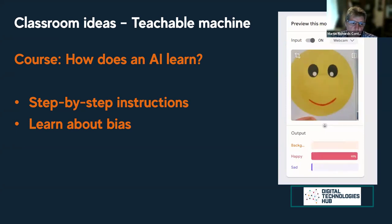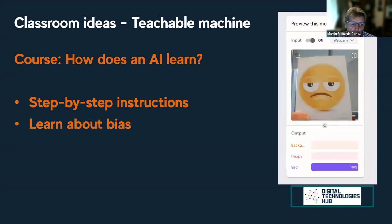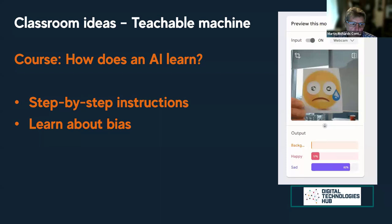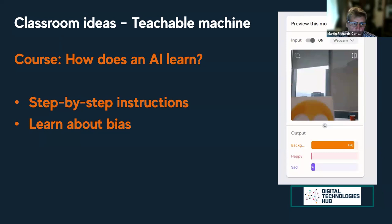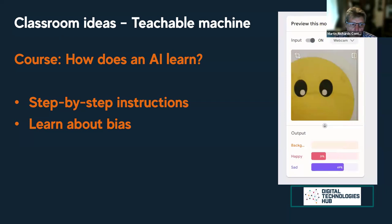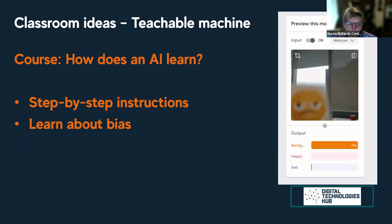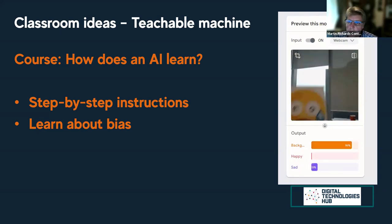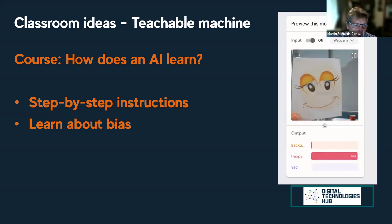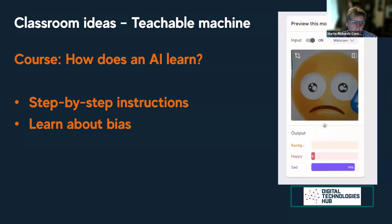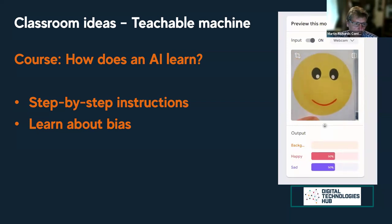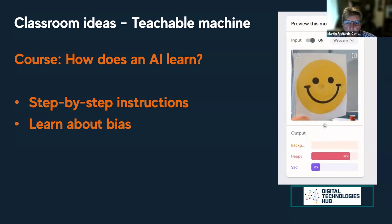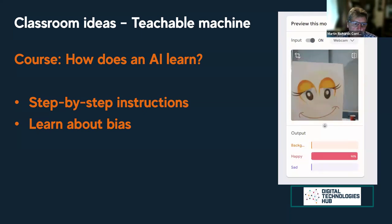Google's Teachable Machine is a really useful application for students to unpack what machine learning is all about in a practical and simple way. You can teach the AI to recognize happy and sad. In our course, we show you how to do this step by step, and also show how to incorporate the concept of bias — for example, if you're testing faces and haven't got a diverse range of faces, your model won't work very well. We also talk through privacy issues and ensuring it's a safe tool to use in your classroom.